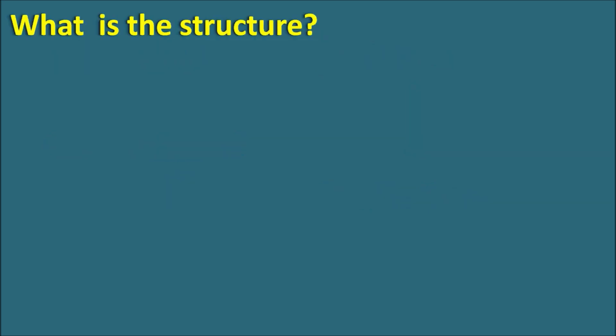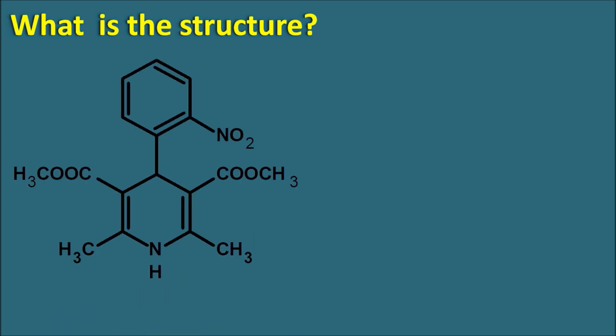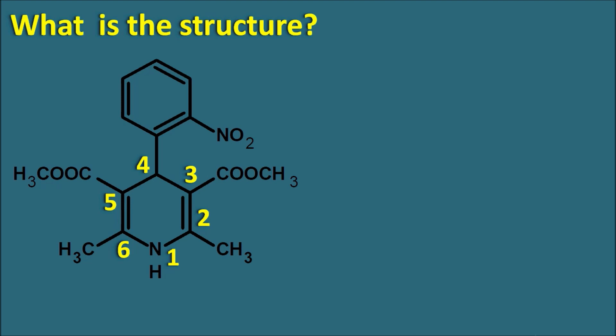What is the structure of nifedipine? Nifedipine is a dihydropyridine. We can observe the structure here — the pyridine ring is saturated at the first and fourth positions. Starting the numbering: 1, 2, 3, 4, 5, 6. So we can observe that the first and fourth positions are saturated, which is why this ring system is called the 1,4-dihydropyridine ring system.